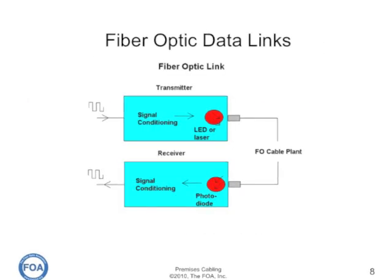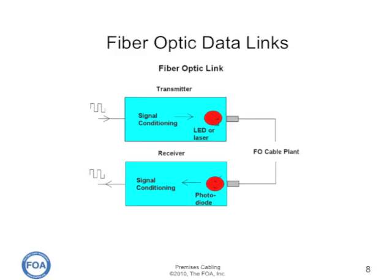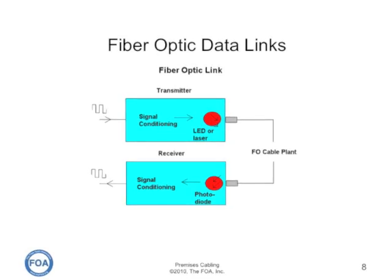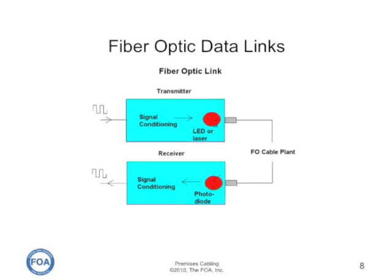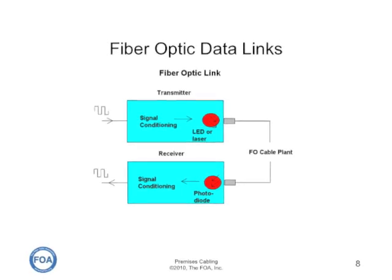A fiber optic data link is actually pretty simple. It takes an electrical input, conditions the signal, and converts it to an optical signal using an LED or laser transmitter. It transmits it through a fiber optic cable plant to a receiver on the far end, where a photodiode converts it from optical to electrical, and signal conditioning transmits it out as a signal compatible with the electrical system being connected over this link.